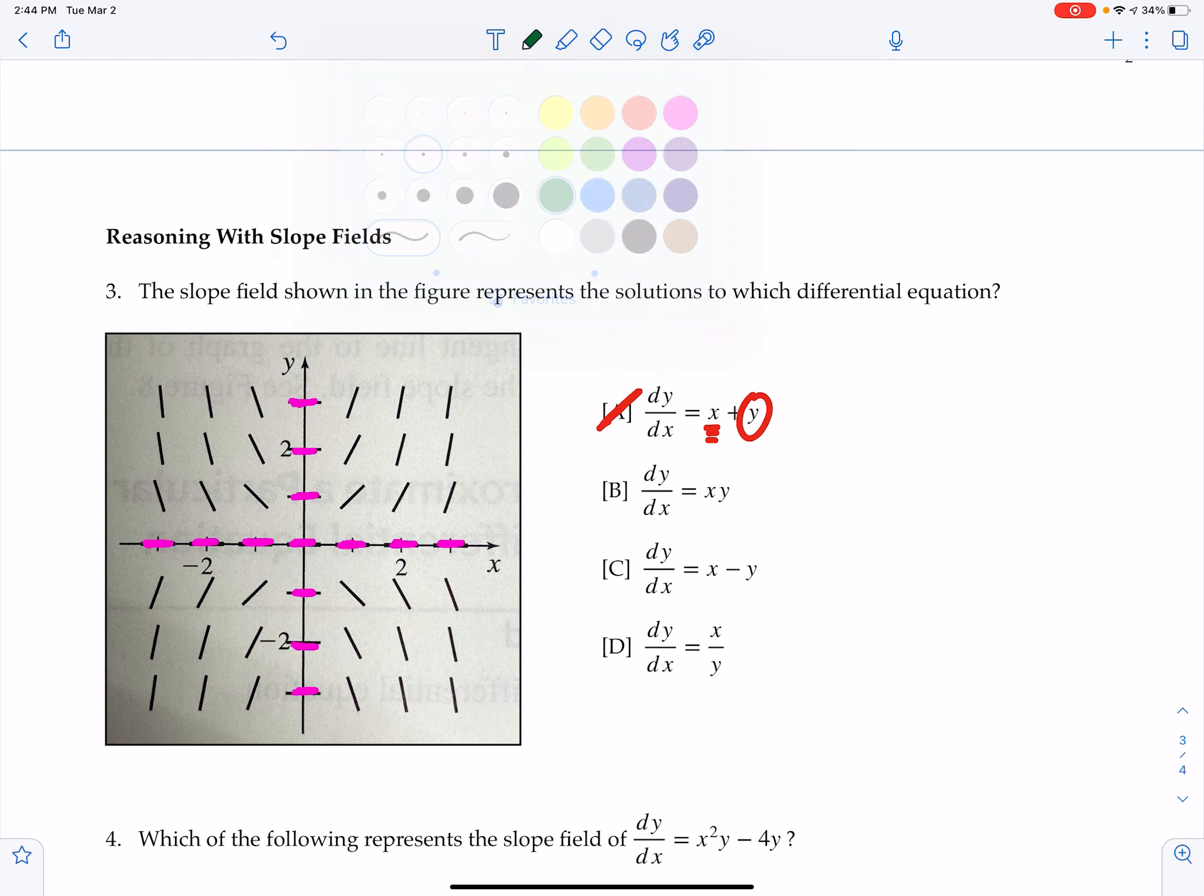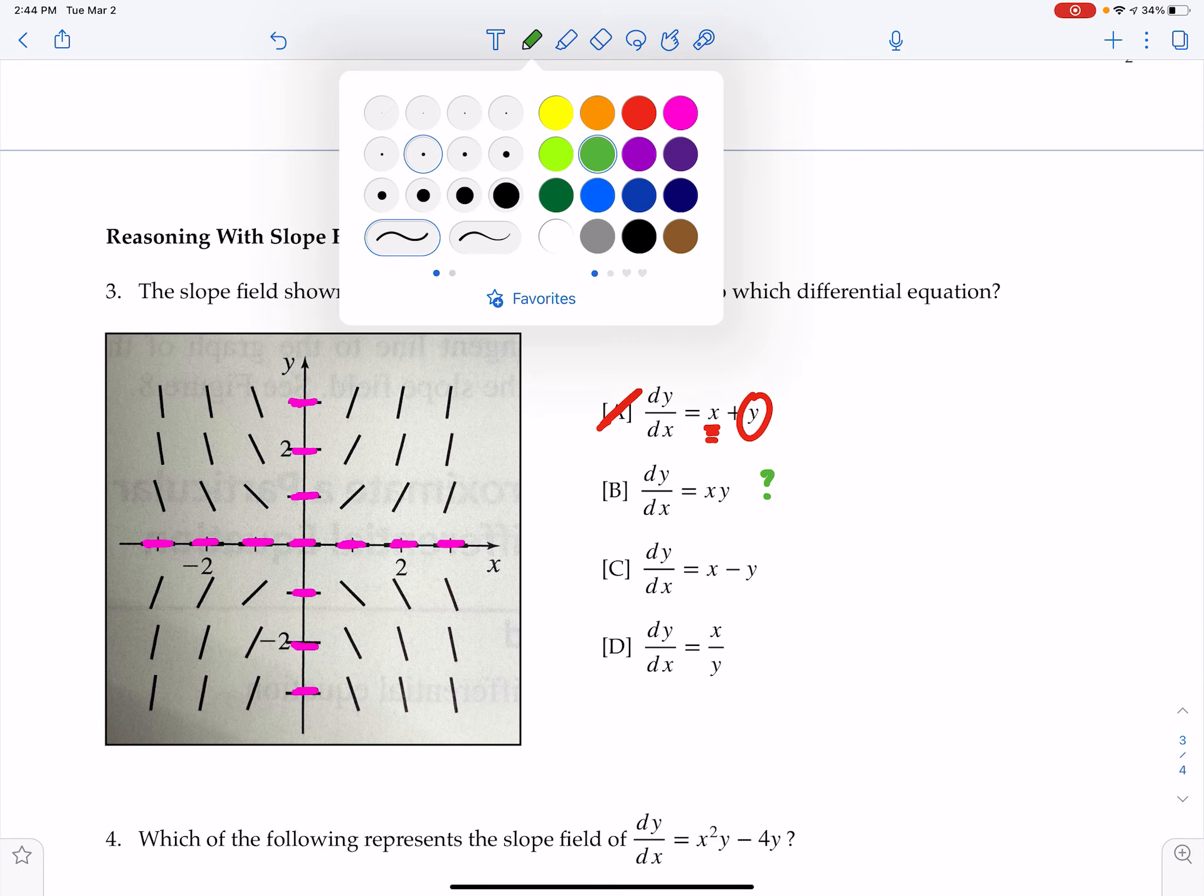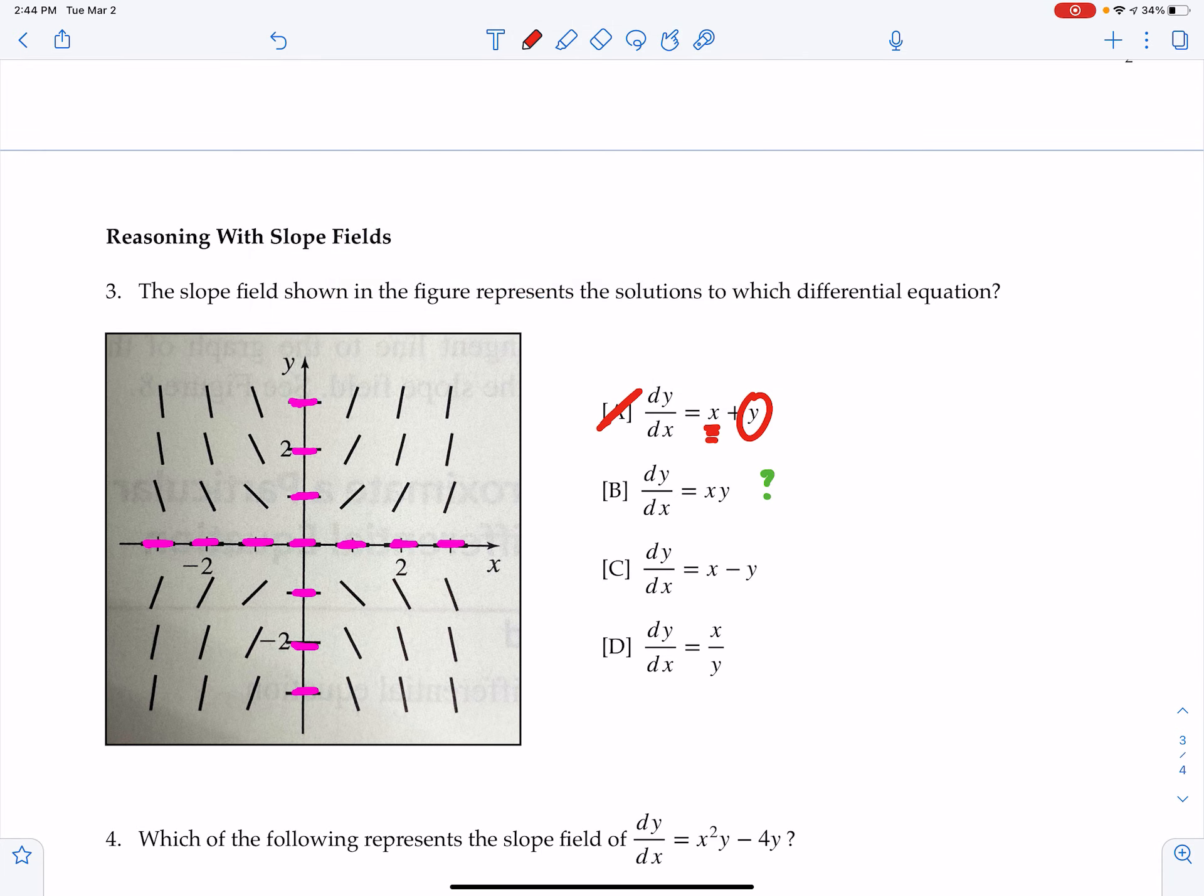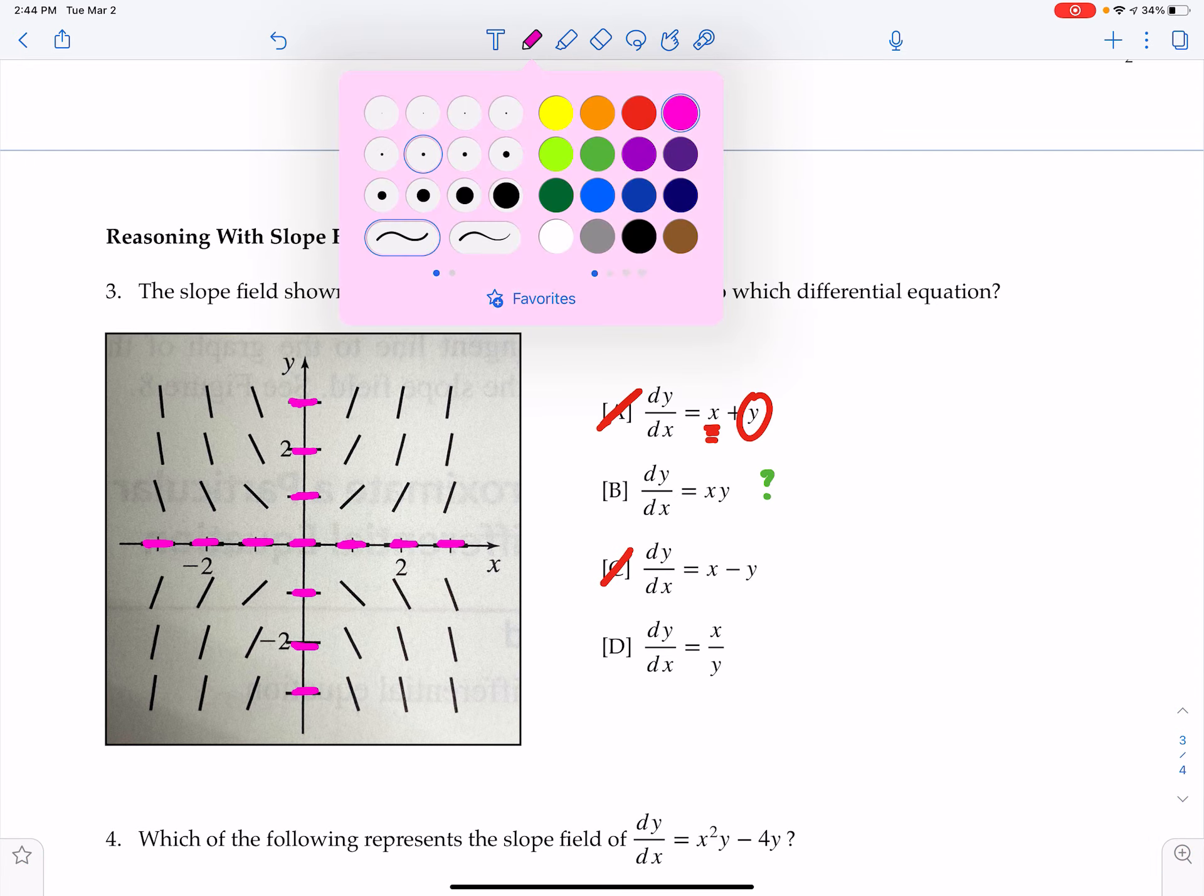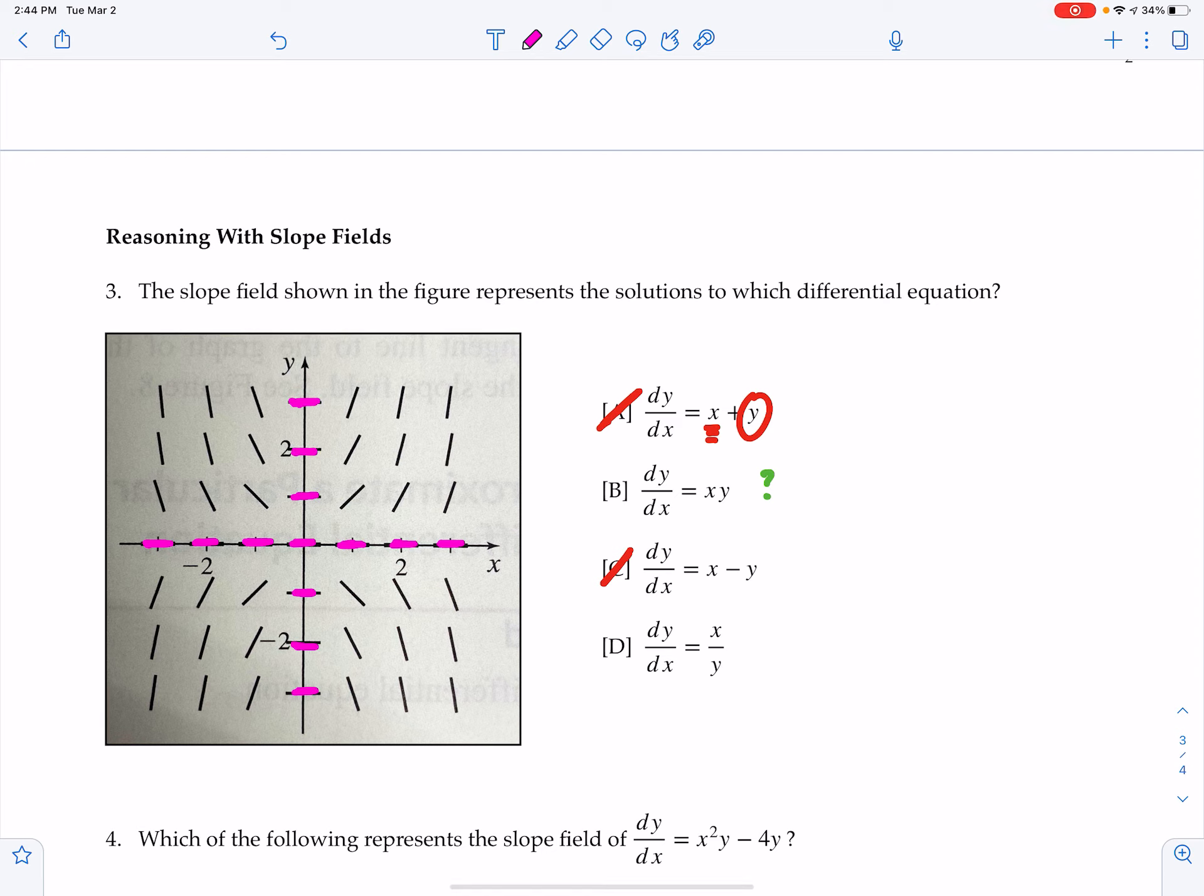We have x times y, which is, for right now, a viable candidate. We might be coming back there. Letter C is no good for the same reason that letter A is, because if we zero out y or we zero out x, the other coordinate is going to dictate, and we are showing that any time that x is zero or y is zero, we have a horizontal slope.